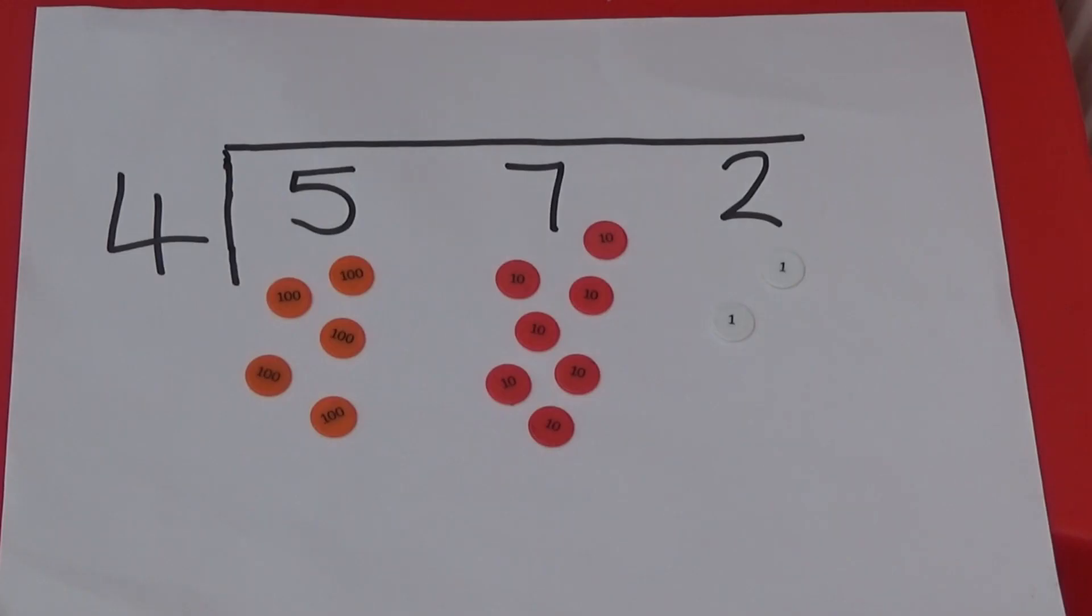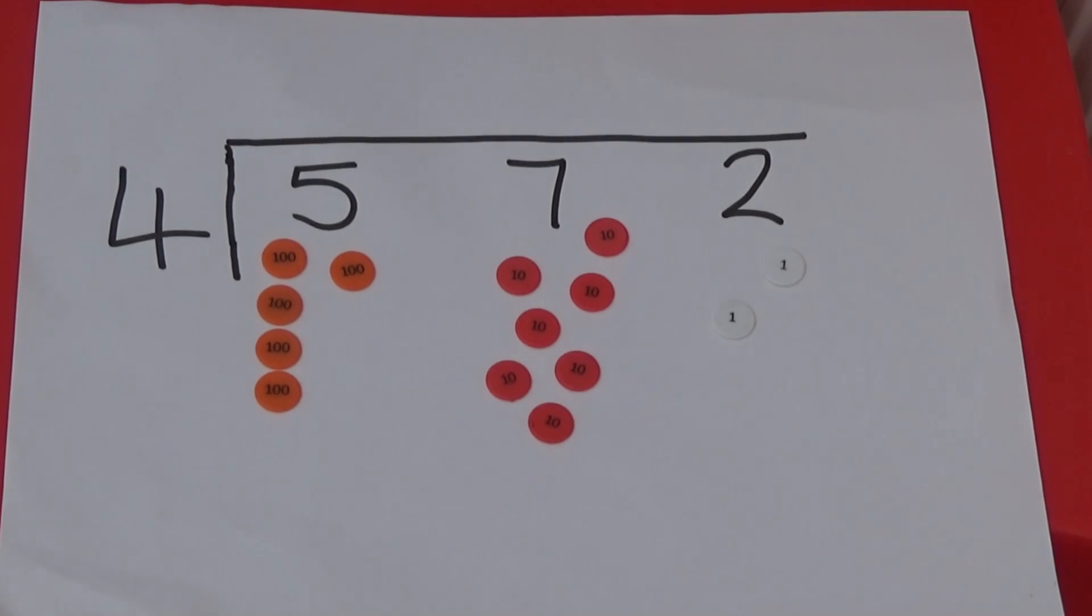As I am dividing by 4 I need to divide the 100s into groups of 4, then the 10s and then the 1s. If I group the 100s into groups of 4 I can make one group of 400. So I am going to put 1 above the line.